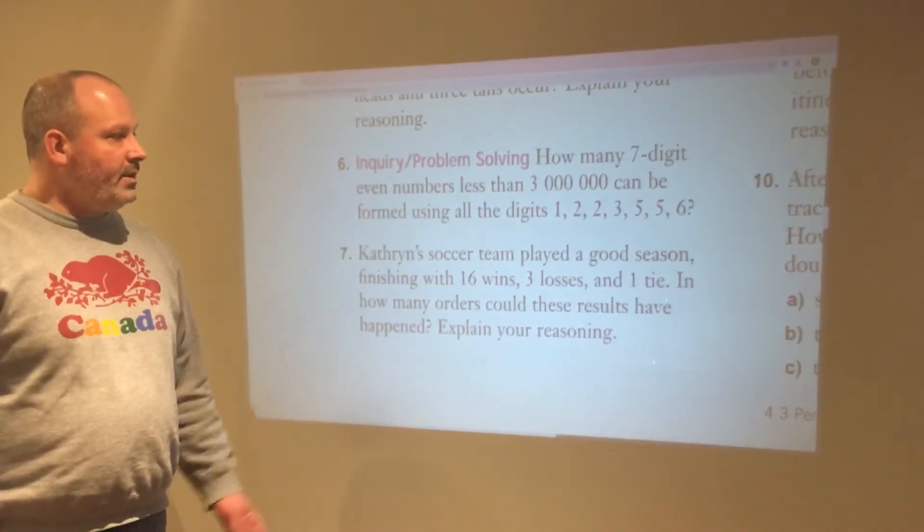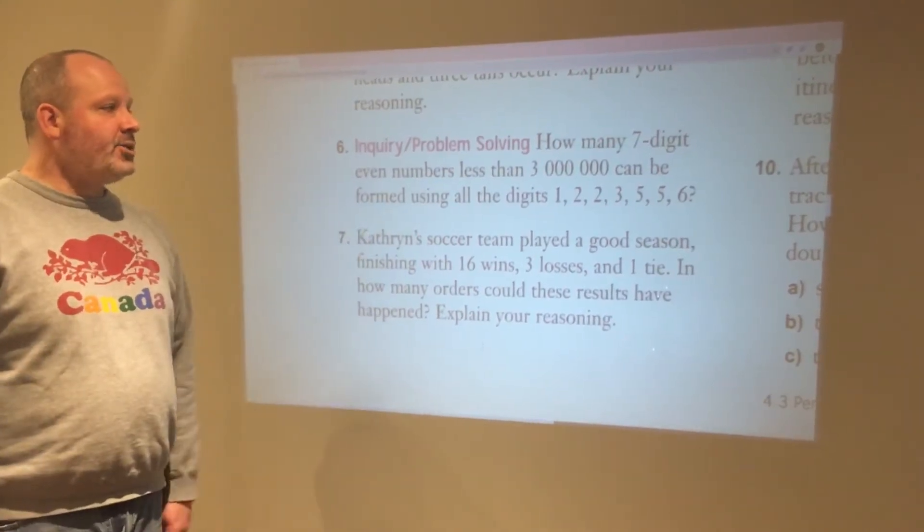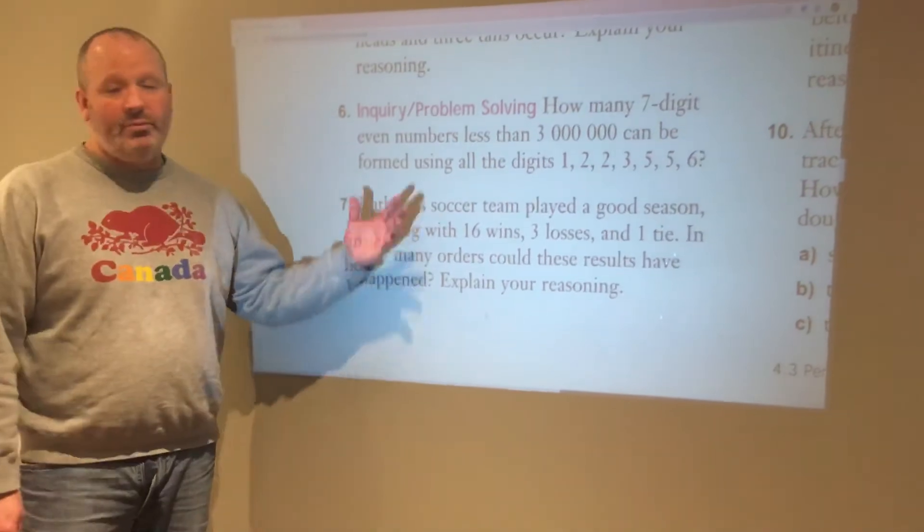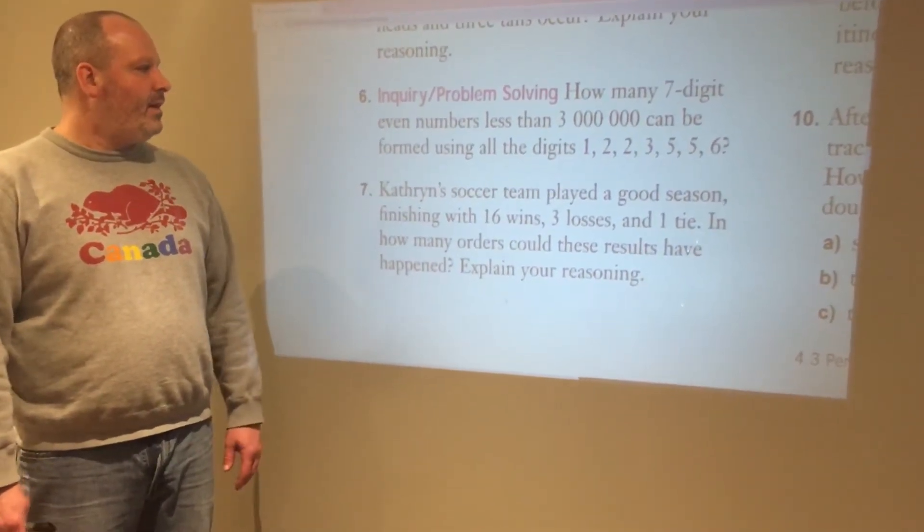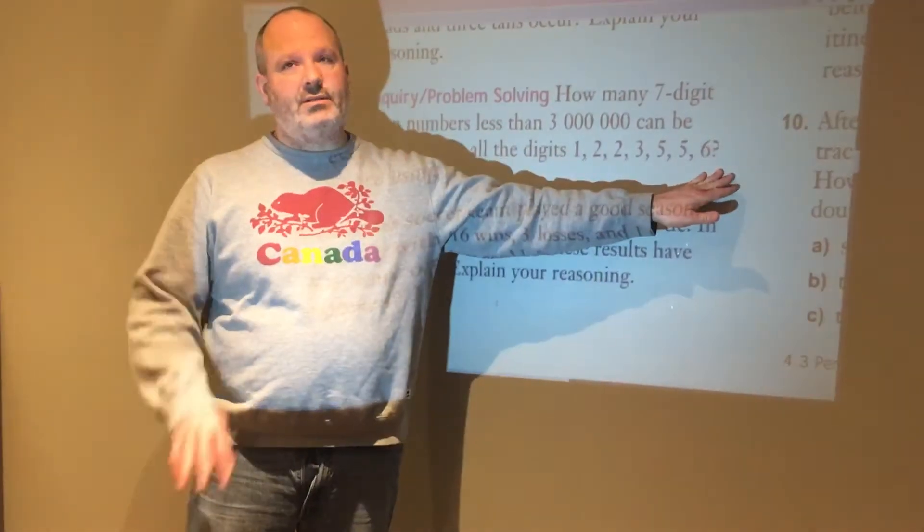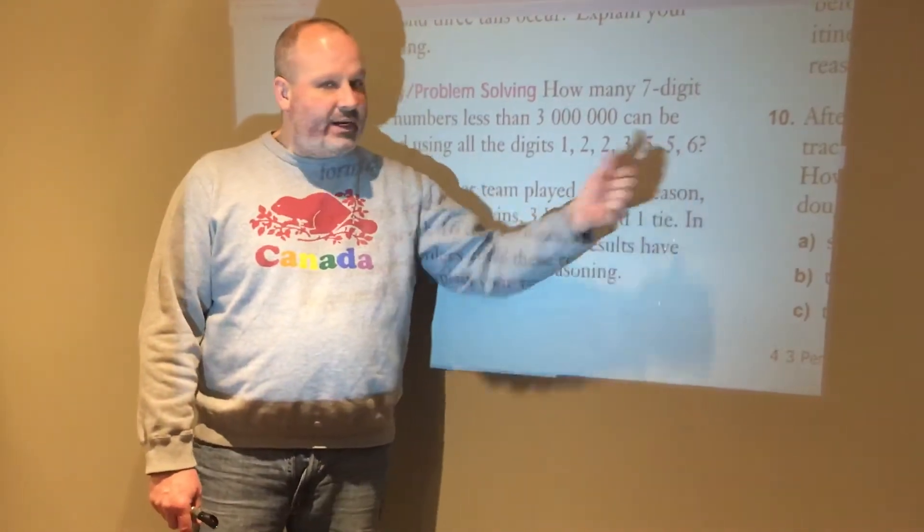Okay, another question. This is from section 4.3, question number 6. It's a good one because it contains all kinds of features having to do with permutations. I have to form a seven-digit number with these seven digits. Notice we have two twos, two fives.